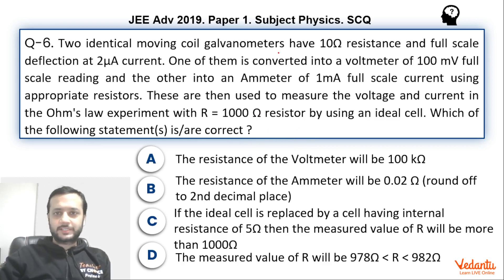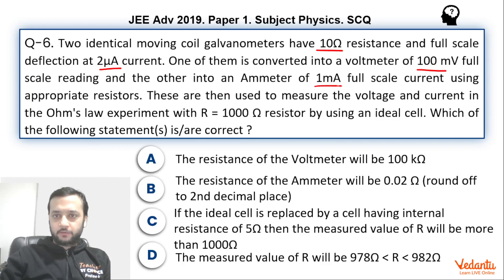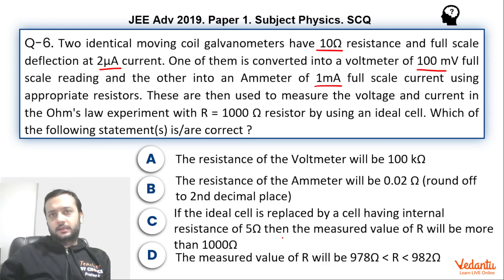Two identical galvanometers, both with 10 ohm resistance and full-scale deflection current of 2 micro-amperes are given. One is converted into a voltmeter of maximum range 100 millivolts, and the other into an ammeter of range 1 milli-ampere. We are trying to measure a resistance of 1000 ohms using this setup.